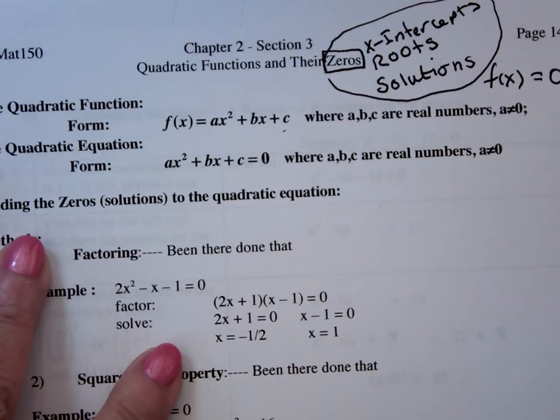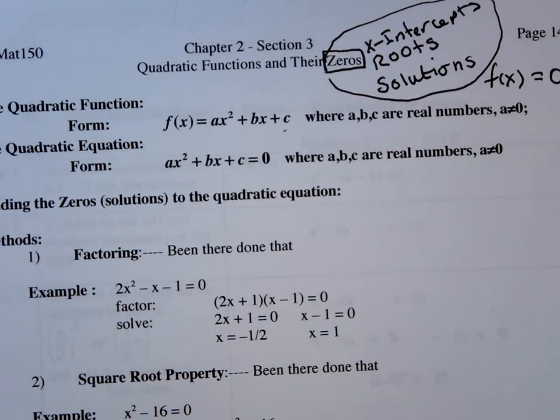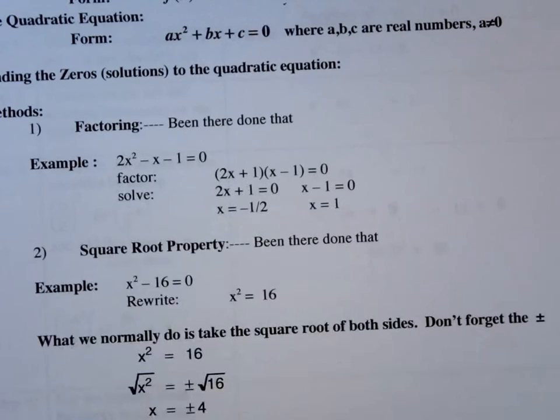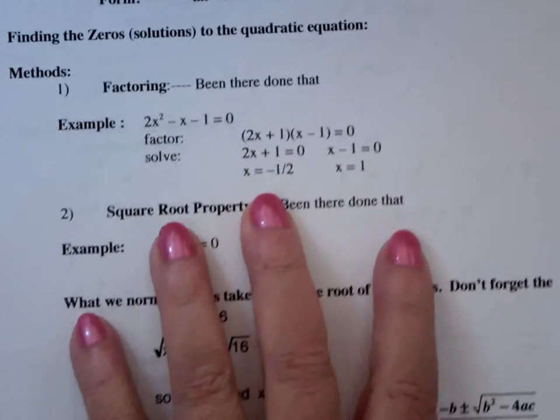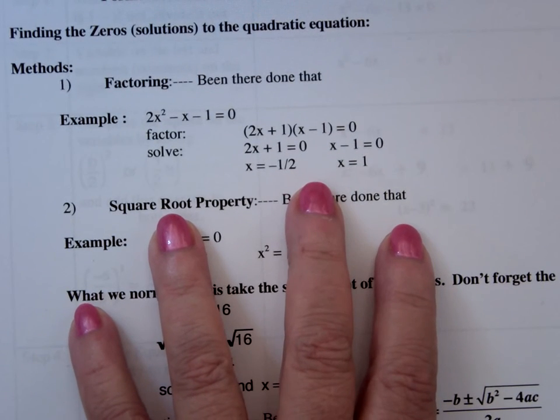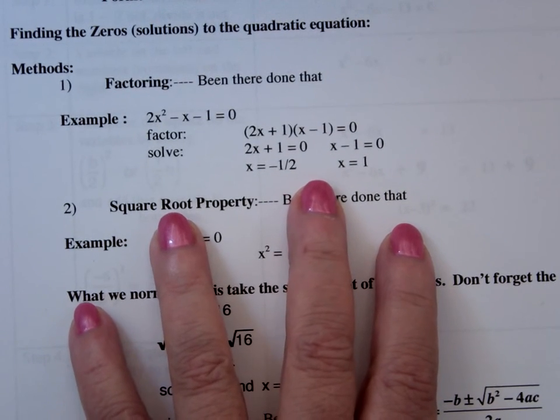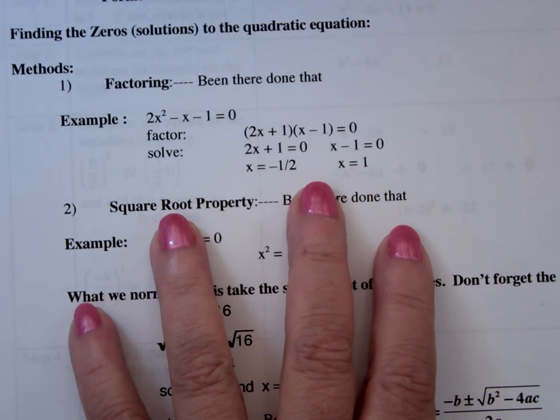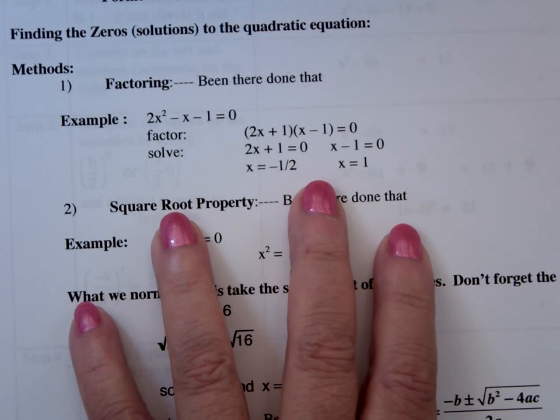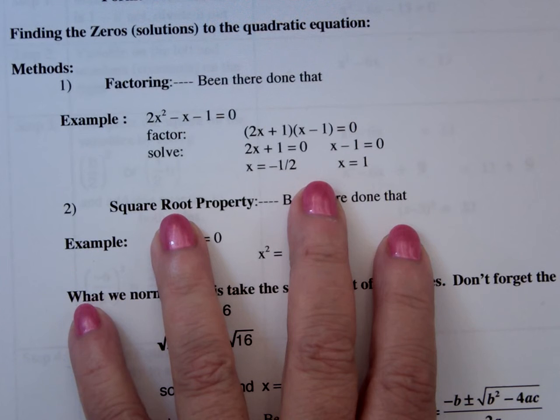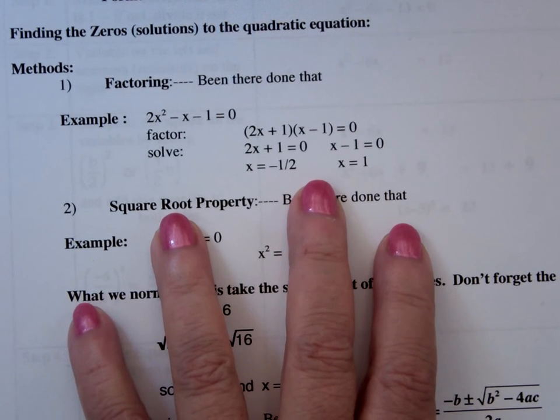Finding zeros or solutions or roots or x-intercepts to a quadratic equation. We have several methods. Method number one is factoring. That's usually my first step. If it looks like it factors, I'll factor it. However, once you get into application problems, 90% or 95% of application problems don't factor. And so that's not going to do you any good. But the problems will factor.